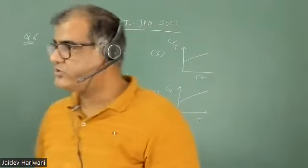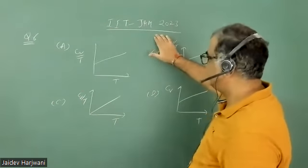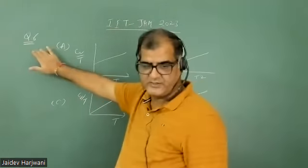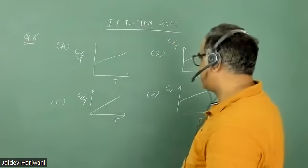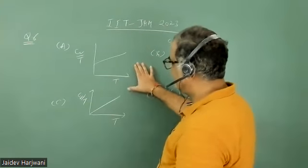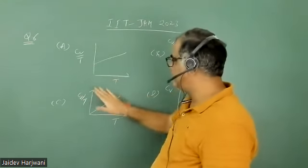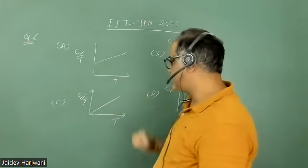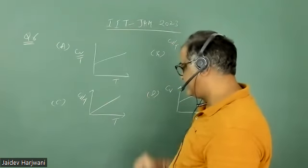Hello students. This is question 6 from IIT-JM 2023. The question asks: what is the correct graph for variation of specific heat versus temperature for a two-dimensional metallic solid?